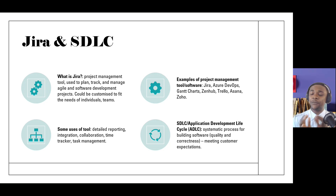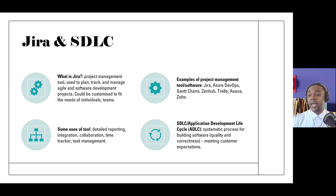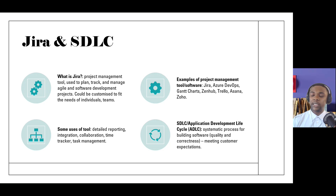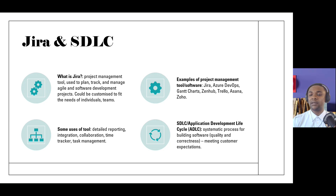Now, what is the software development life cycle? It can also be called the application development life cycle — they're basically the same thing. It is a systematic process for building software — a step-by-step approach set in place to make sure the dev team is building a quality and correct software product for customer satisfaction. Each step must complete before the next begins, so the team can produce quality software. SDLC has different stages, which I'll cover next.